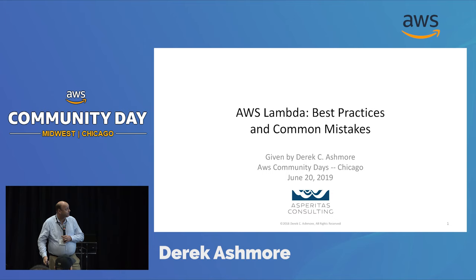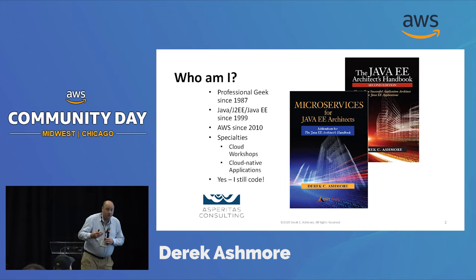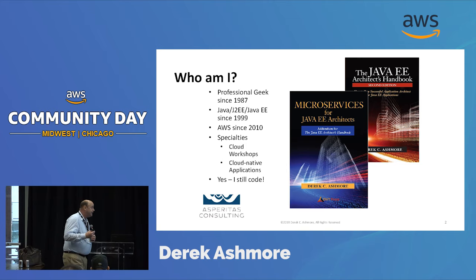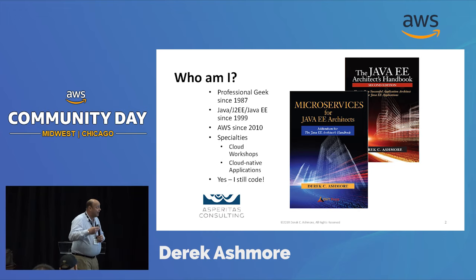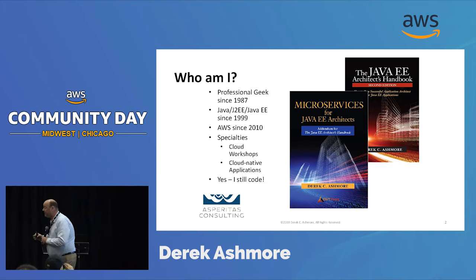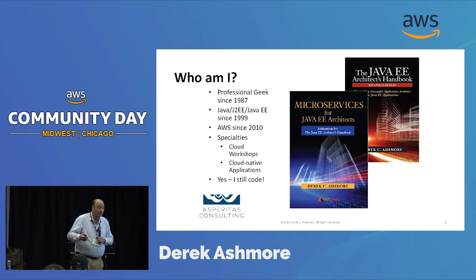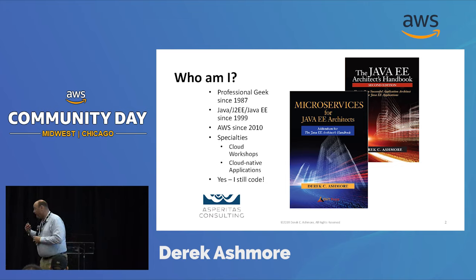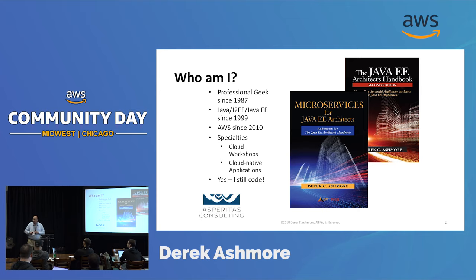A little bit about me — I'm a professional geek. I started in this business in 1987, which puts me at old but not quite ancient and decrepit. I've got a wide variety of experience, spent a couple of decades in the Java space before moving to the cloud around 2010. I've been doing a lot of cloud work, moving applications to the cloud and refactoring them to better take advantage of cloud capabilities. I also write blog articles and books.